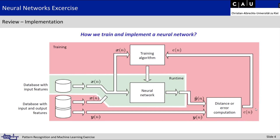Now we can come to the second part: the implementation of a neural network. We need to train a neural network that we can afterwards apply in a runtime environment. I will explain the training using this diagram. For the training part, we look at the red portion of the diagram starting at the bottom left — we have a database with input and output features, where x is our signal going into the neural network.